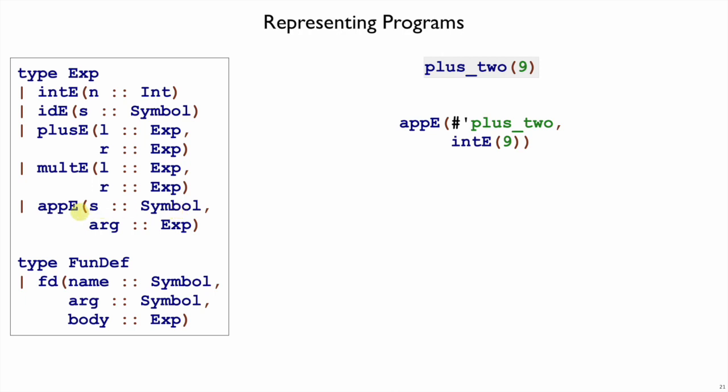So this is an interesting thing about app e. It's similar to plus e and multi in that it has two parts. But they're not both expressions. For the functions, for now, they're always just function names.